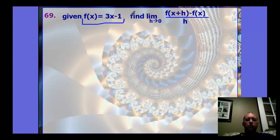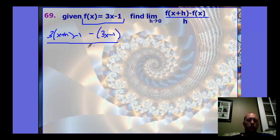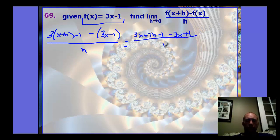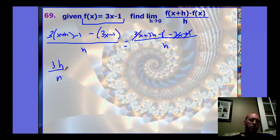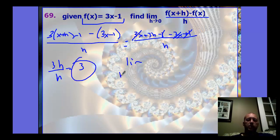For another problem, here is our function. We have f of x plus h which is three times x plus h minus one, minus f of x which is three x minus one, all over h. Distributing and simplifying: we get three h over h, which reduces to three. The limit as h approaches zero of three is just three.